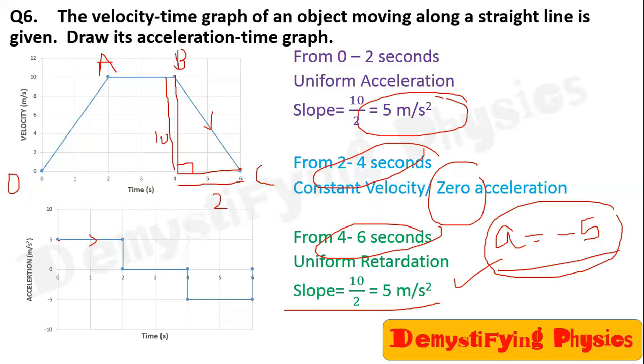Clear? 0 to 2, it's constant. Acceleration is constant, plus 5. Then 2 to 4, it's 0. And then from 4 to 6, it is minus 5. Acceleration is on the y-axis. Time is on the x-axis.